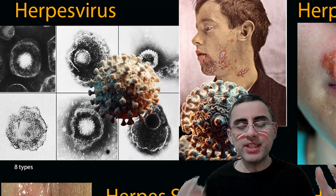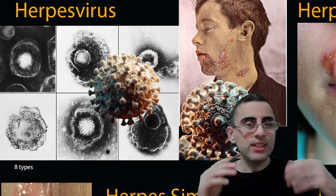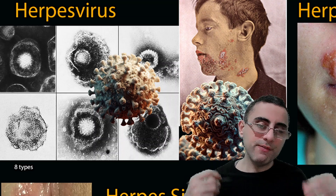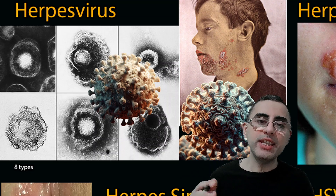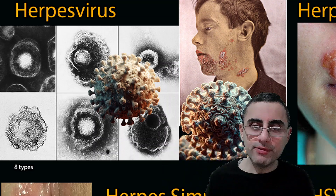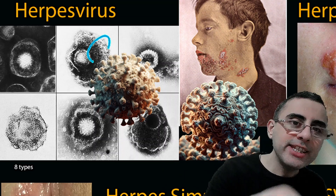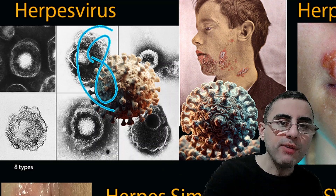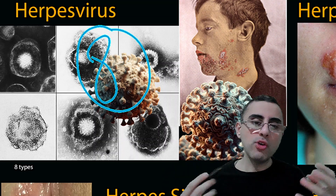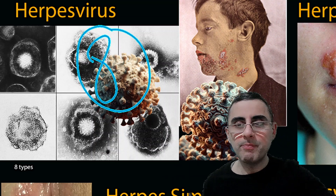Herpes virus is a parasite which infects humans very easily, and when they infect, they stay in the body usually for life. There are 8 types of herpes viruses and each of them causes different types of diseases.